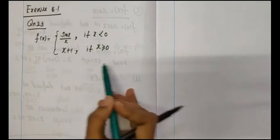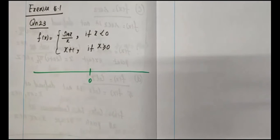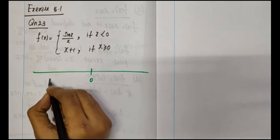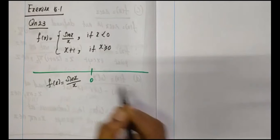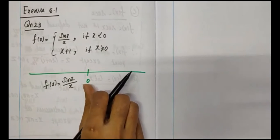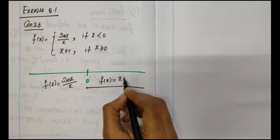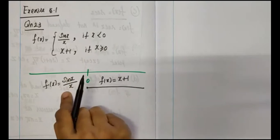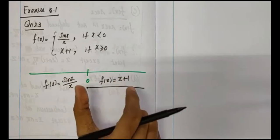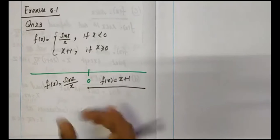If we look at the number line, x is equal to 0 is the key point. For x less than 0, f of x is equal to sin x by x. For x equal to 0 and greater than 0, f of x is equal to x plus 1. So 0 is the point where we check the left-hand limit and right-hand limit.